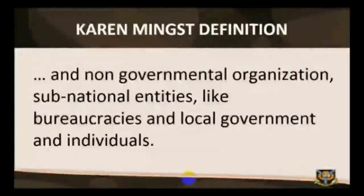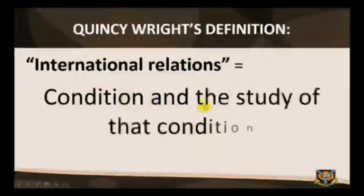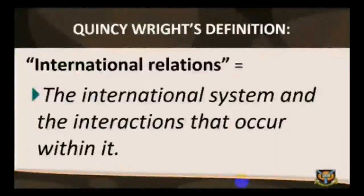International relations refer to the interactions among actors across territorial boundaries, and on how those interactions affect people, states, regions, and the world in general. According to Quincy Wright, international relations refer both to a condition and the study of that condition — the international system and the interactions that occur within it. It is concerned with relations that take place beyond national boundaries, between groups of major importance in world history, particularly territorially organized nation states and the dynamics of these relationships.